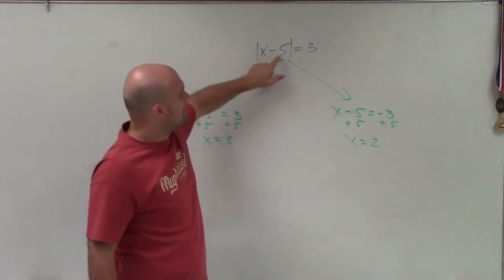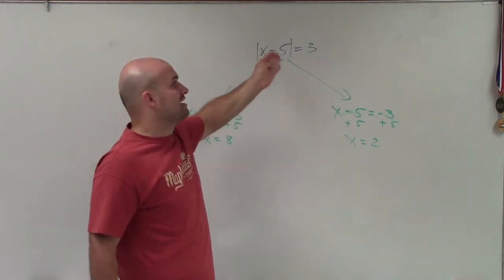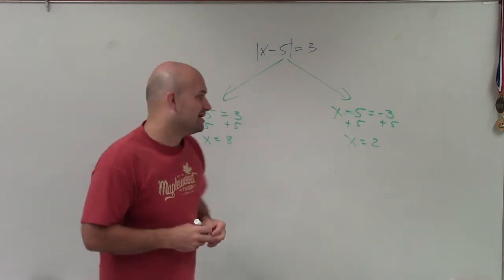Plug in 2. 2 minus 5 is negative 3. Absolute value of negative 3 is equal to 3. Ta-da. There we go.